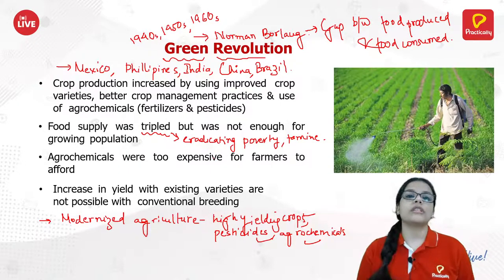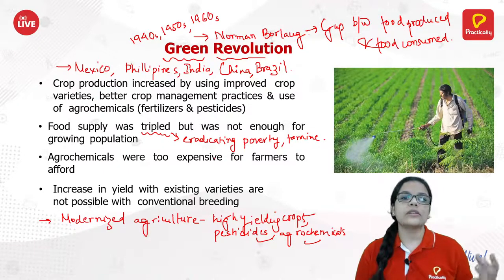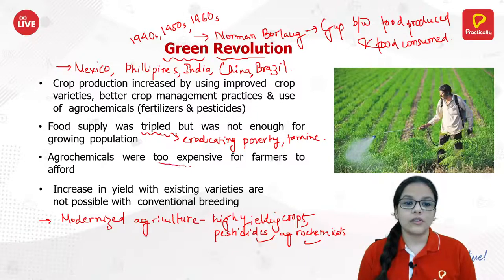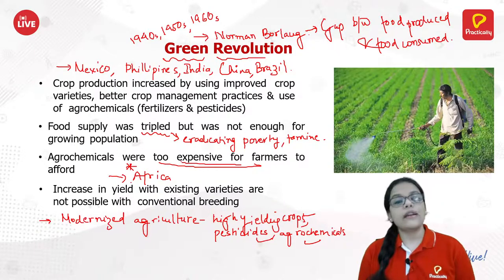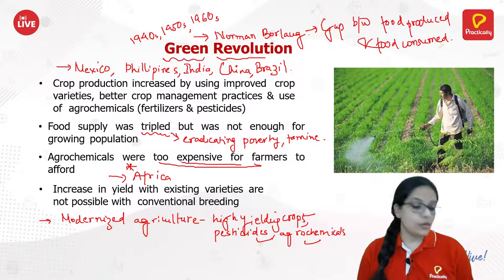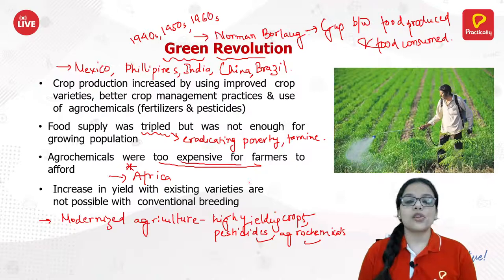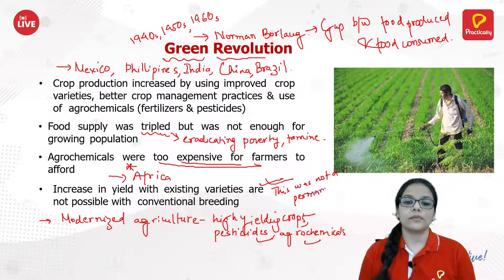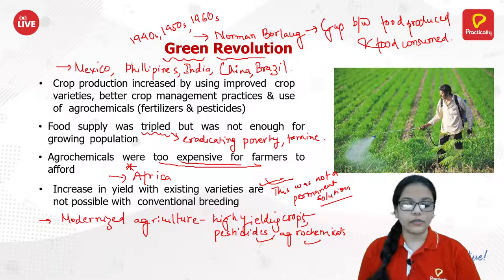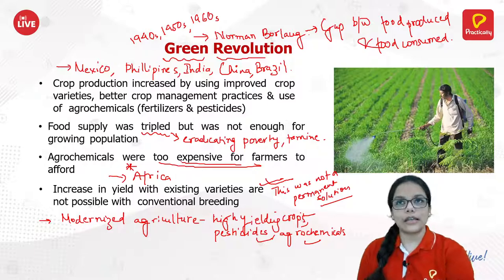Norman Borlaug's Green Revolution was very popular and effective, but what he did not understand was that these agrochemicals and pesticides were very expensive for farmers, especially in Africa. Although the Green Revolution solved a lot of food problems, it was not a permanent solution.